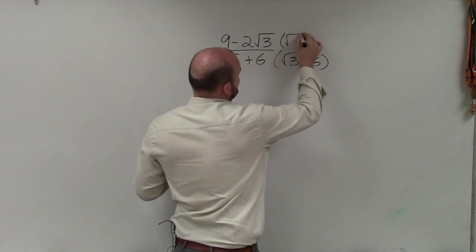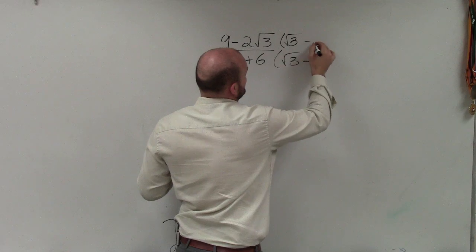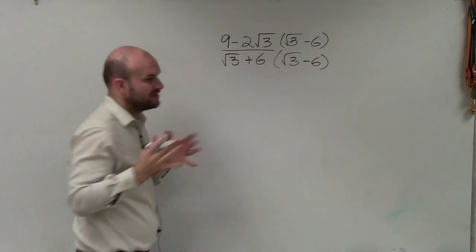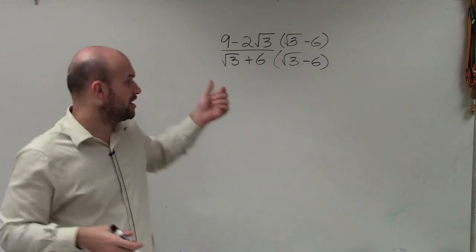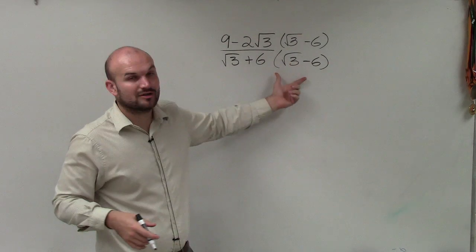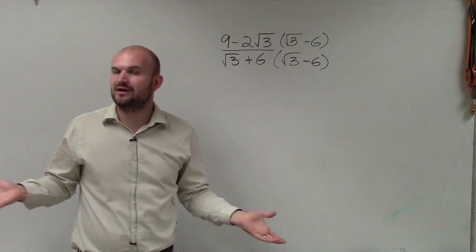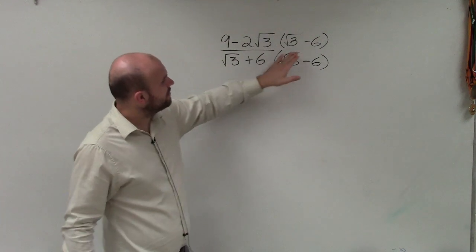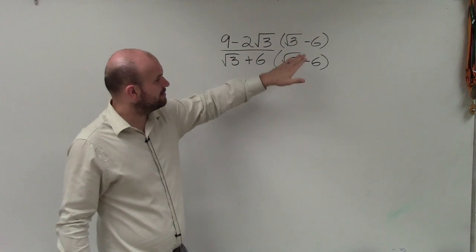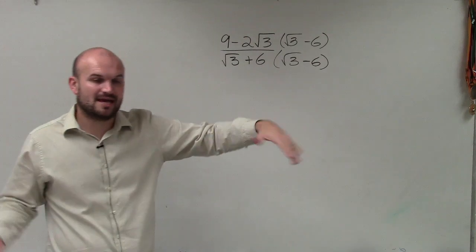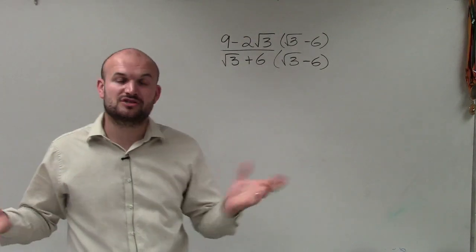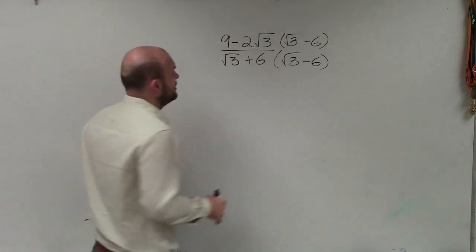What the conjugate does is that it produces a difference of two squares. Therefore, we can get rid of our square root, and our middle terms that we'd multiply by add up to 0. It's also important when we multiply our conjugate, we multiply the denominator and the numerator the same, that's going to produce an equivalent fraction, which is not going to change our answer.